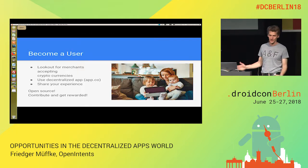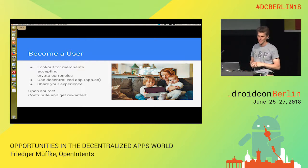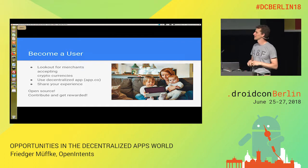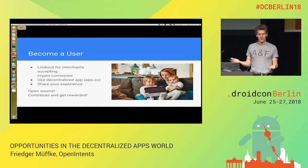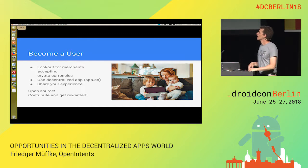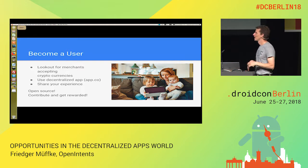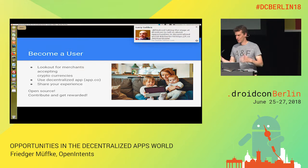First, try to become a user. Look out for merchants that accept cryptocurrencies. Try decentralized apps — there's an app store that is technology agnostic, app.co. There you can see what is available nowadays and try to use them. Make your own experience, teach your friends and family what you experience. Decentralization only works when it's open source, and as we're coming from cryptocurrencies, there are often opportunities where contributing gets you rewarded in one way or another.